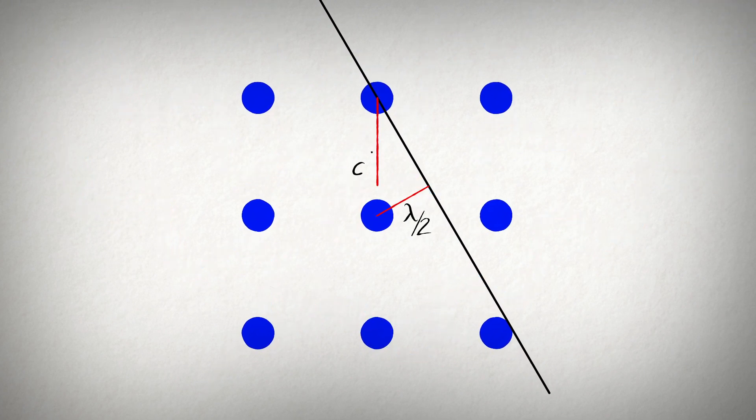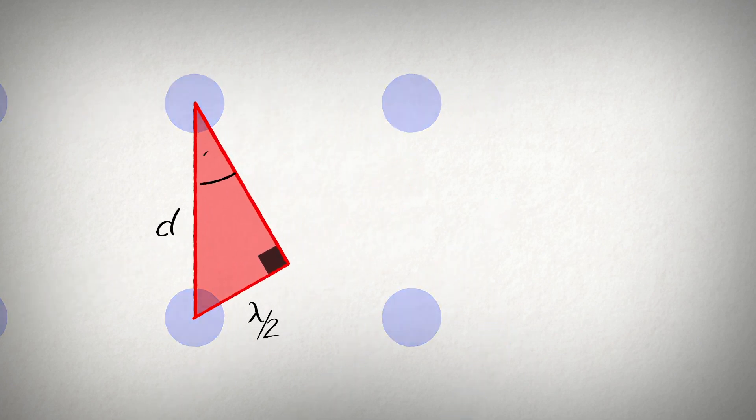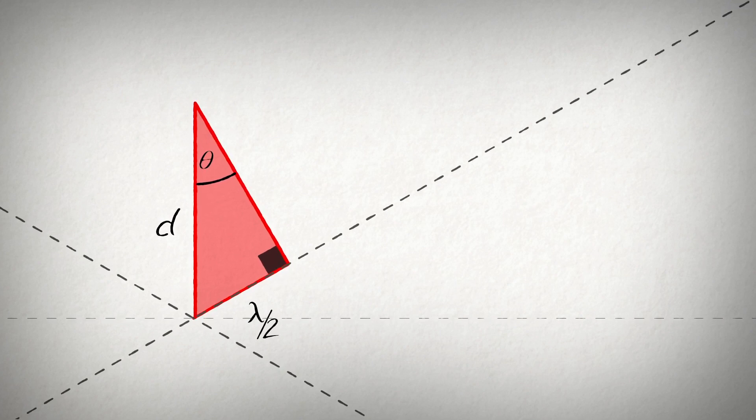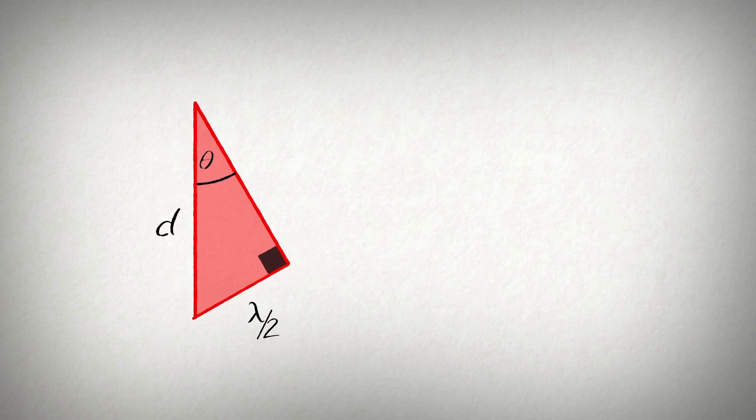The exact angle at which diffraction occurs can be determined from the red triangle. The angle at the top is theta, half the angle between the incident and scattered beams. The long side is the distance between the atomic planes, and the short side is one half of a wavelength.